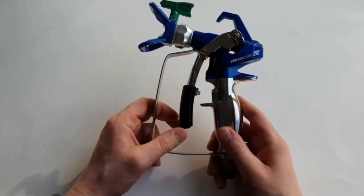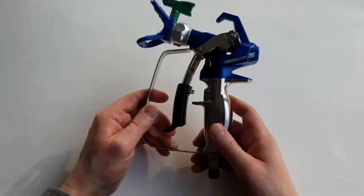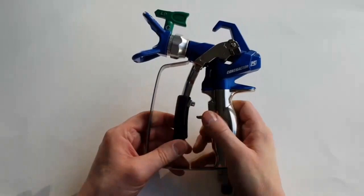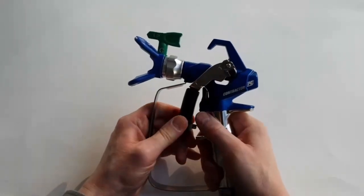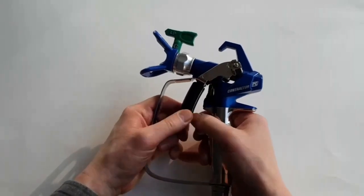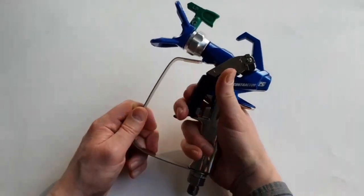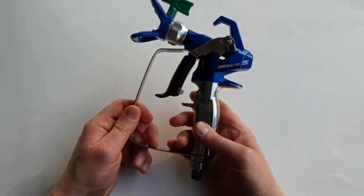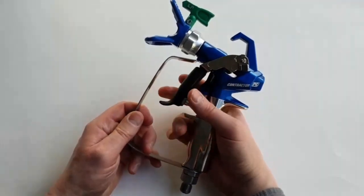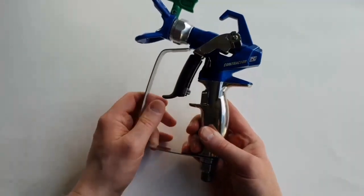This is great if more than one person is using the gun or when your hand gets tired and you want a little bit more leverage on the trigger. To adjust you simply tighten or loosen the adjusting knob at the back of the gun at the back of the trigger. That's two fingers. This works very well and you can set it to your needs.